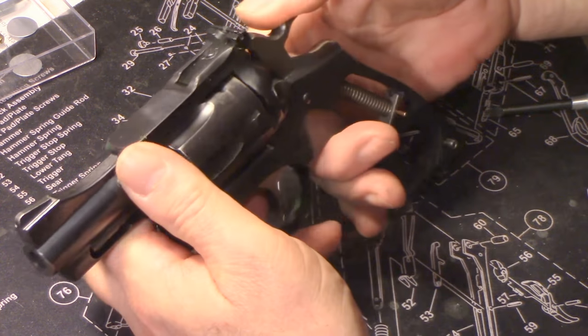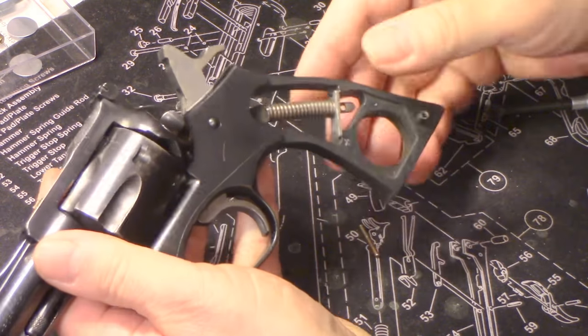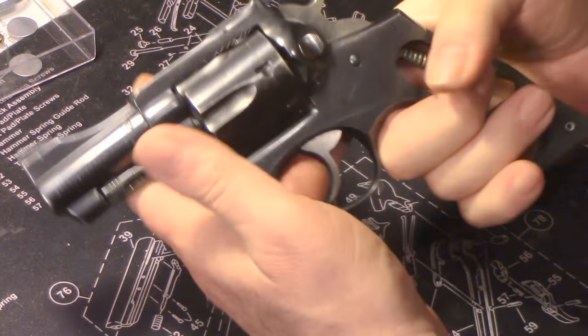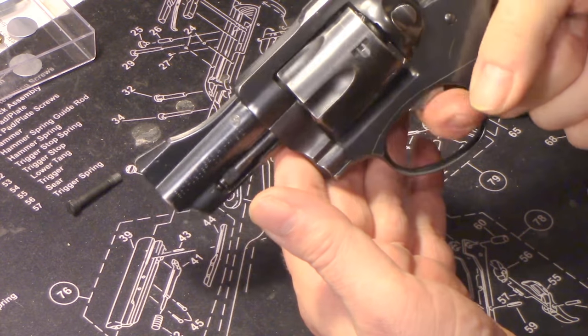Once that's set in place, all you have to do is pull the hammer back. And then the little pin comes out. And now you've got a fully functional revolver again.